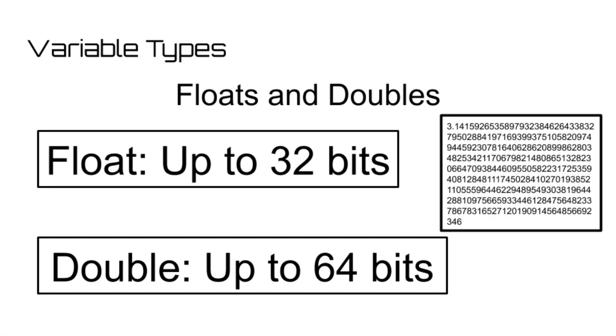The next two types of variables are floats and doubles. Both of these variable types are floating point data types, which essentially means that these variables can store numbers with decimal places. The difference between the two is that a float can store numbers of precision up to 32 bit, while a double can store numbers with precision up to 64 bit. Essentially, a double can store more decimal places than a float.